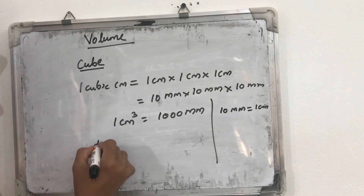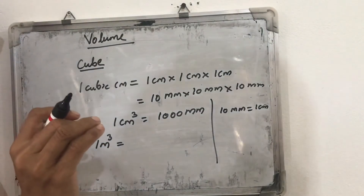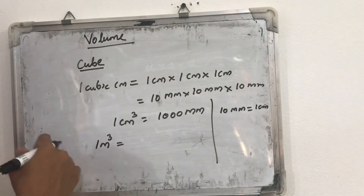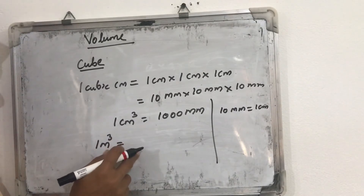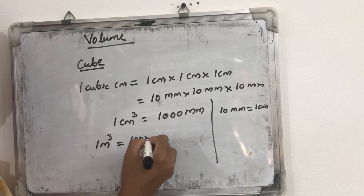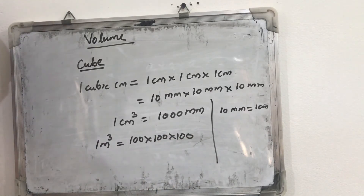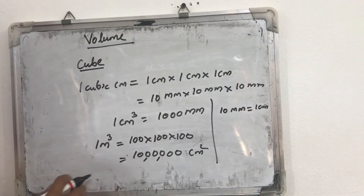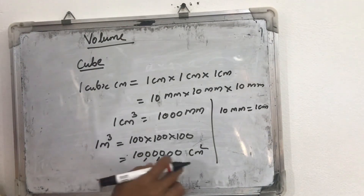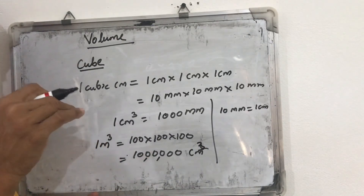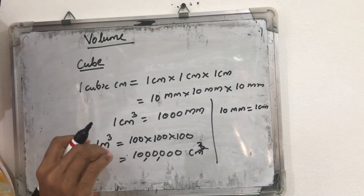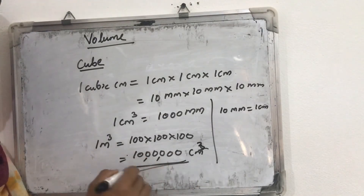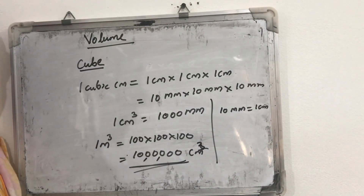Similarly, when converting meter cube to centimeter cube: 1 m = 100 cm, but since we are dealing with cubes, we multiply 100 × 100 × 100. So 1 m³ = 10 lakh (1,000,000) cm³. When converting meters to centimeters we only multiply by 100, but for cubic units we must account for all three dimensions. Problems related to these topics we will discuss in the next class. Thank you.